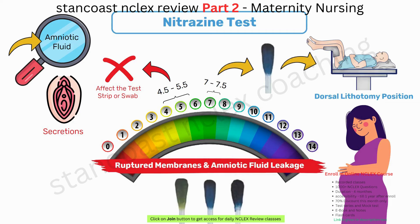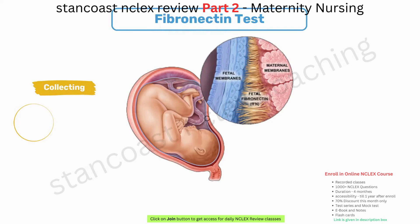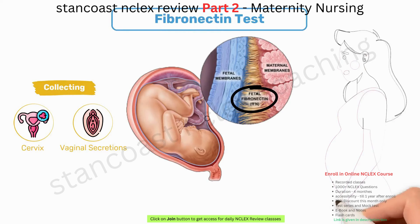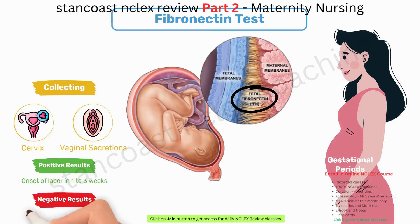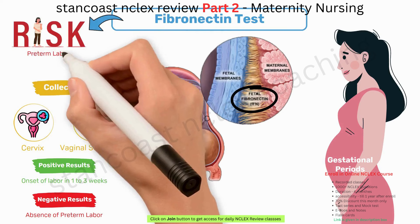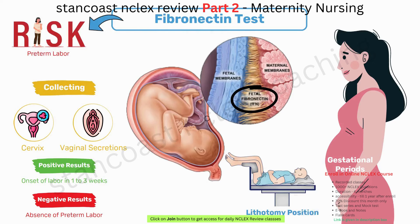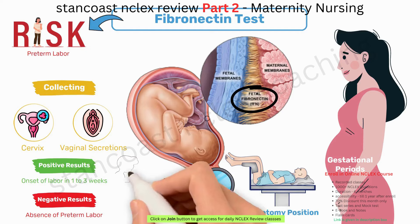The fibronectin test involves collecting cervical and vaginal secretions to detect fetal fibronectin, a protein found during specific gestational periods. Positive results may suggest the onset of labor in 1 to 3 weeks, while negative results are more predictive of the absence of preterm labor. This test is typically employed when there is a risk of preterm labor. To perform it, place the client in lithotomy position for a sterile speculum examination, obtain cervical secretions using a cotton swab, and send the samples to the laboratory for fibronectin presence analysis.